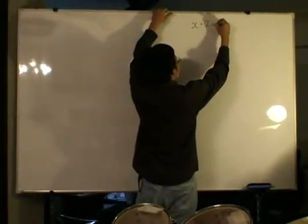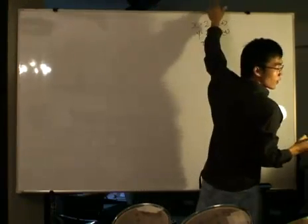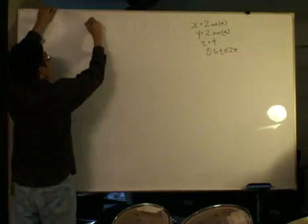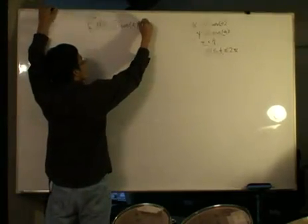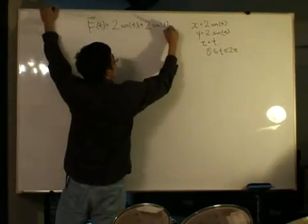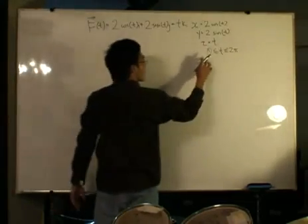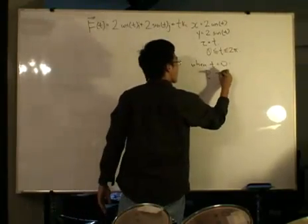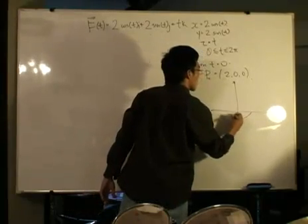Now we'll define the same curve parametrically: x equals 2 cosine t, y equals 2 sine t, and z equals t, where t is 0 to 2π. So immediately from here we go to the vector function F written in terms of t. It's 2 cosine t i plus 2 sine t j plus t k. Now that means the curve when t equals 0, the point P₀ is (2, 0, 0).